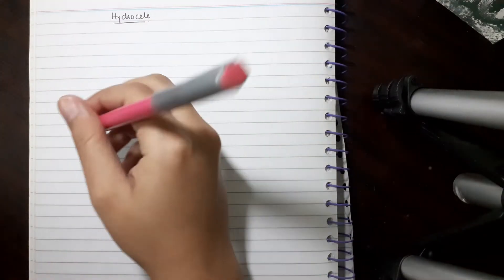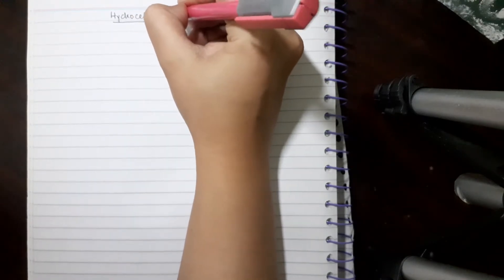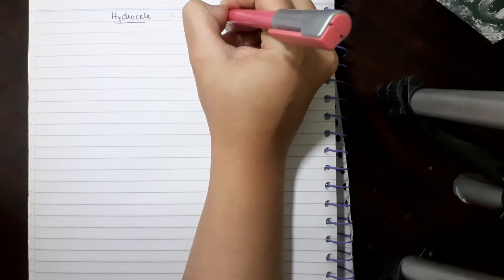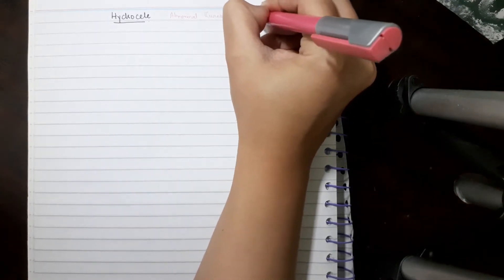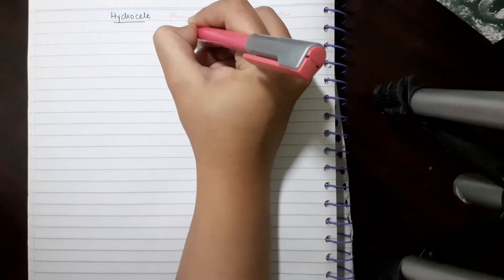Hi, so today's video is about hydrocele. I'm going to discuss briefly the clinical signs, symptoms, and history taking. Hydrocele is basically an abnormal quantity of fluid within the tunica vaginalis.